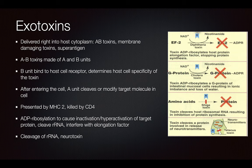The AB toxins are made out of two subunits. The B subunit binds to the host cell receptors, which determines the type of host cell that's going to be infected. Once it has bound and entered the cell, the A unit is going to cleave or modify the target molecule in the cell, and then it's going to be presented by MHC2 and killed by a helper T cell. ADP ribosylation is going to cause the inactivation or hyperactivation of the target protein. It's going to cleave the rRNA and interfere with the elongation factor.